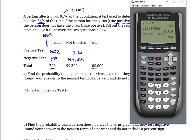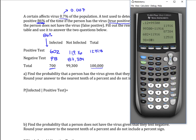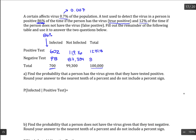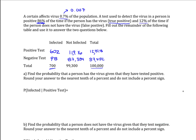Adding across the columns: 602 plus 11,916 is 12,518. So of our entire population, the number that would get a positive test is 12,518. And 87,482 would get a negative result. Notice that 87,482 plus 12,518 equals 100,000, confirming everything in the table is set up correctly.